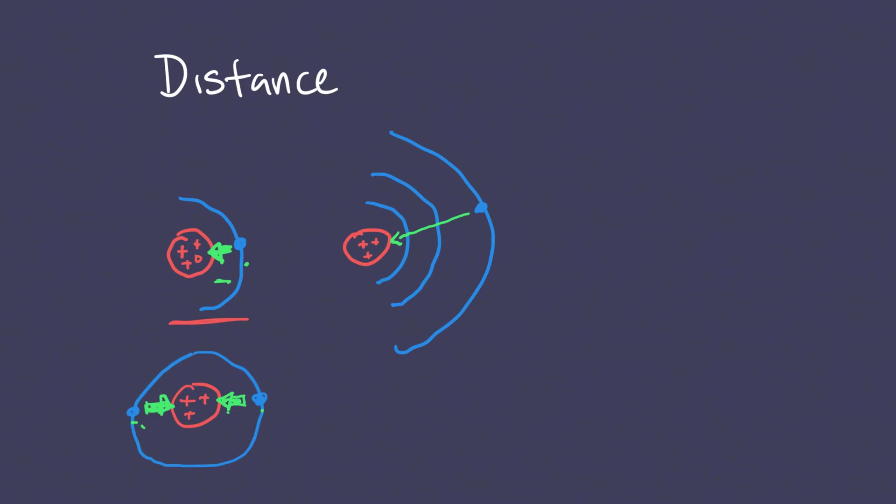As for this first variable, the biggest takeaway is that it's all about distance: the further they are, the weaker the attraction; the closer they are, the stronger the attraction. So now let's talk about the second variable.